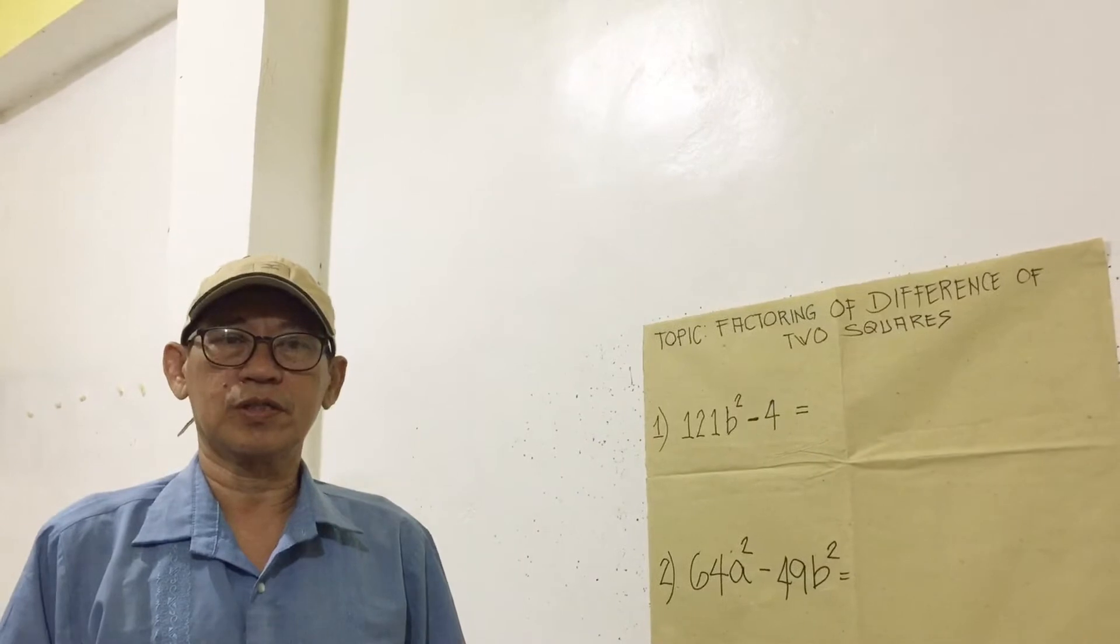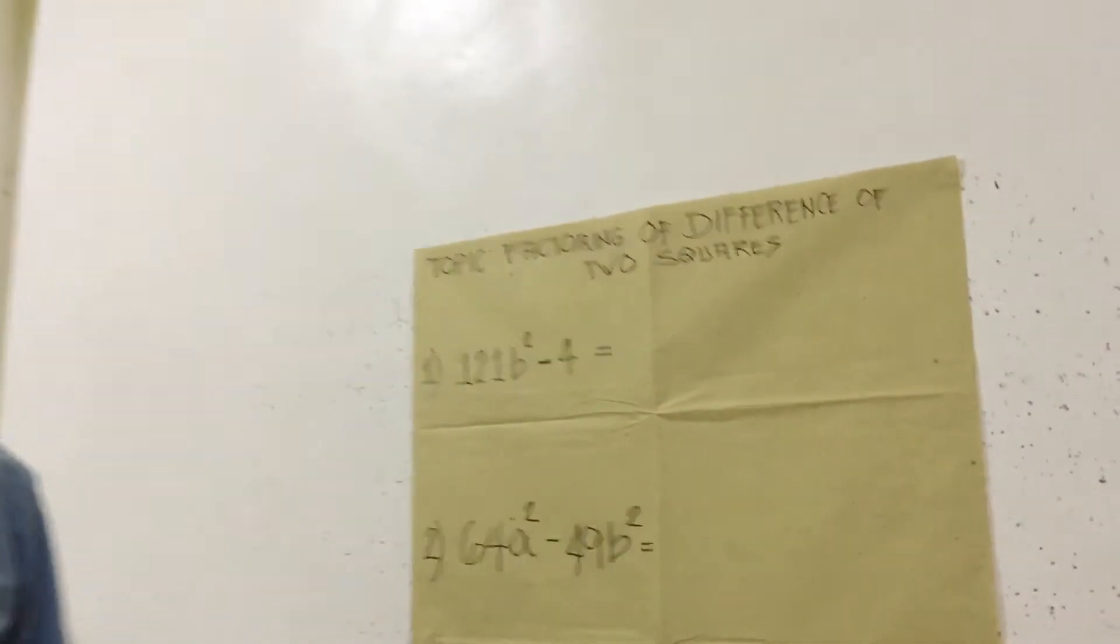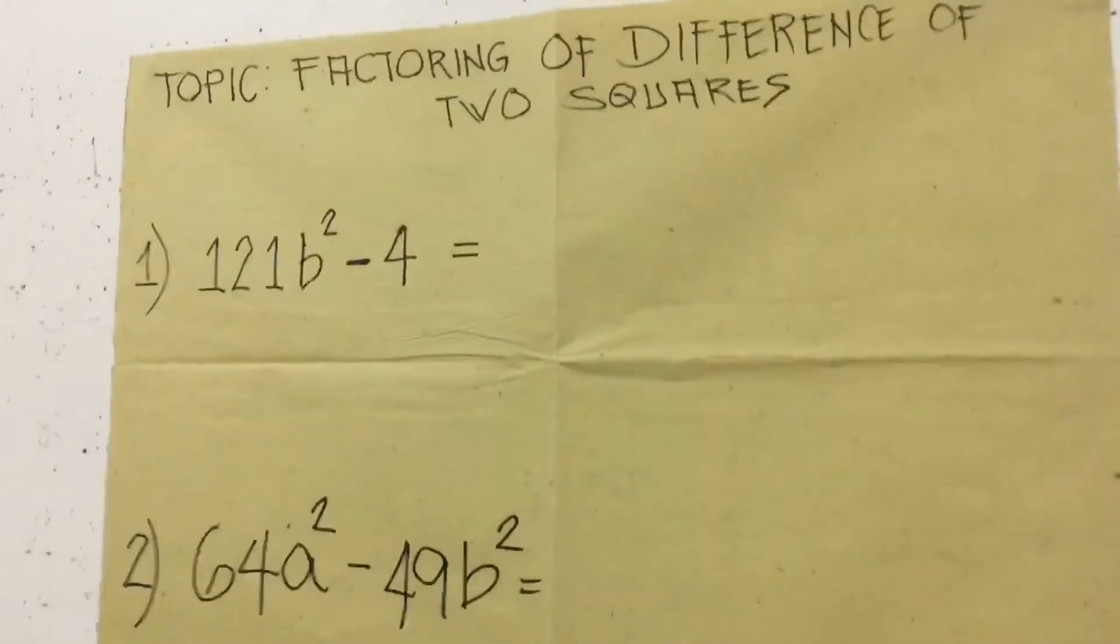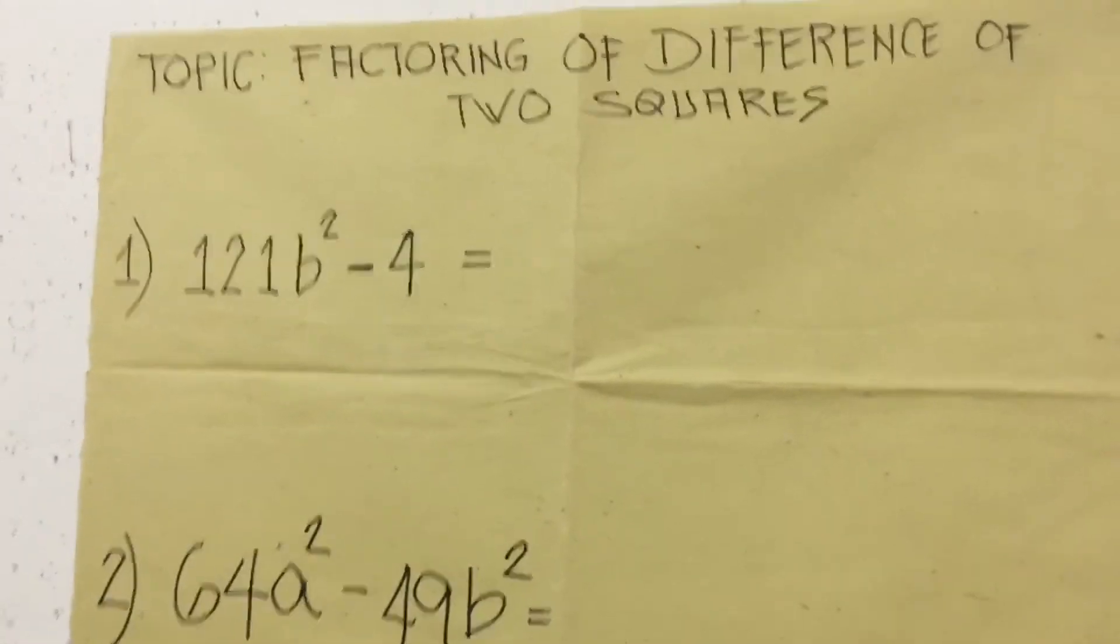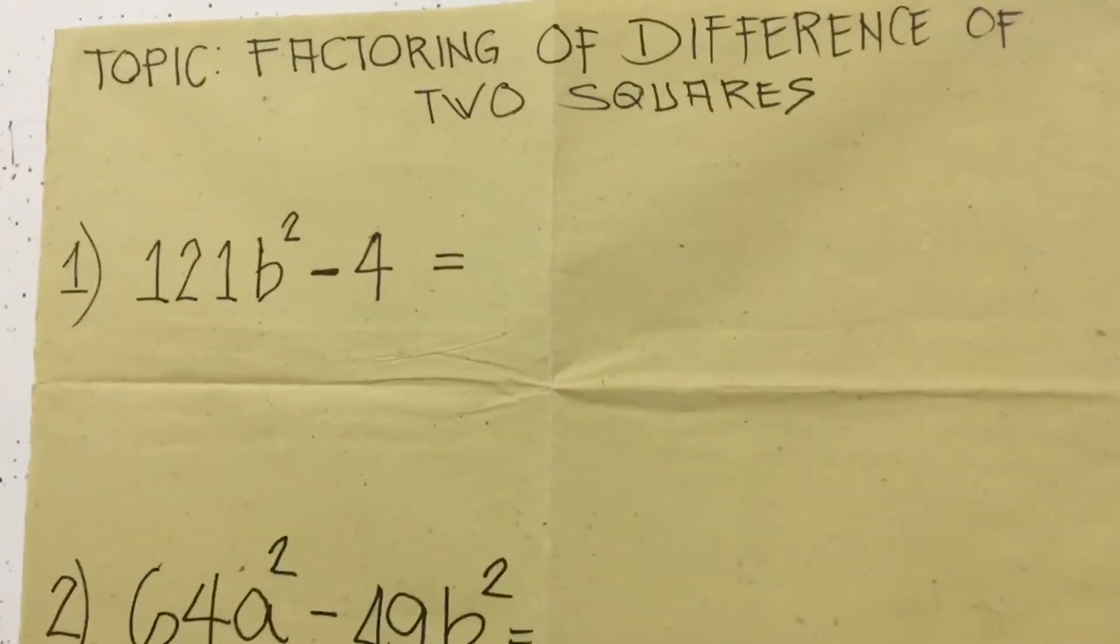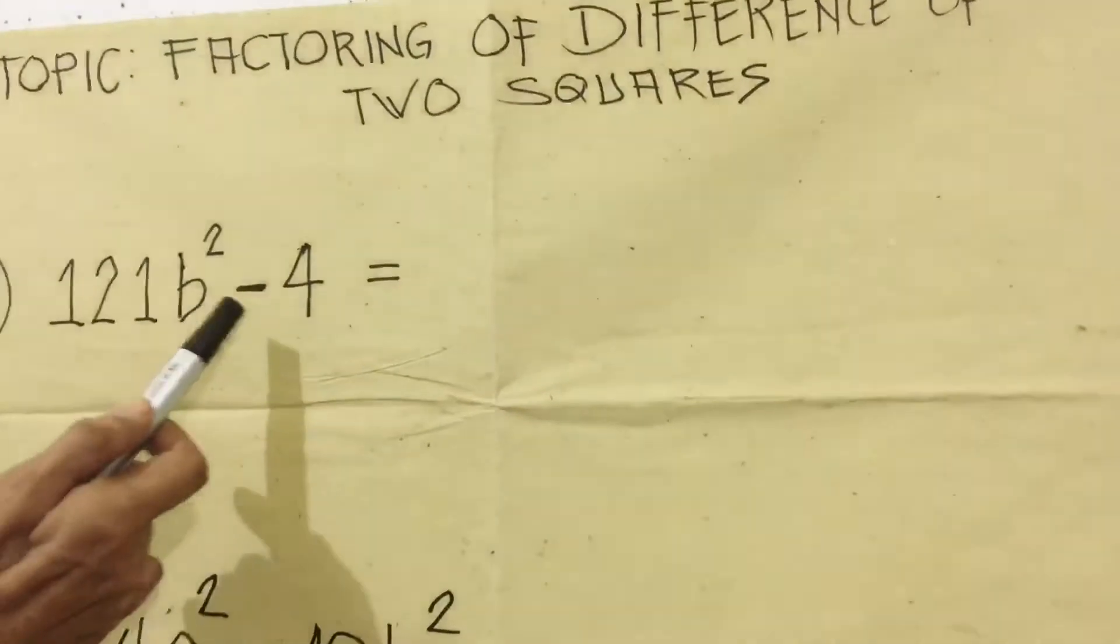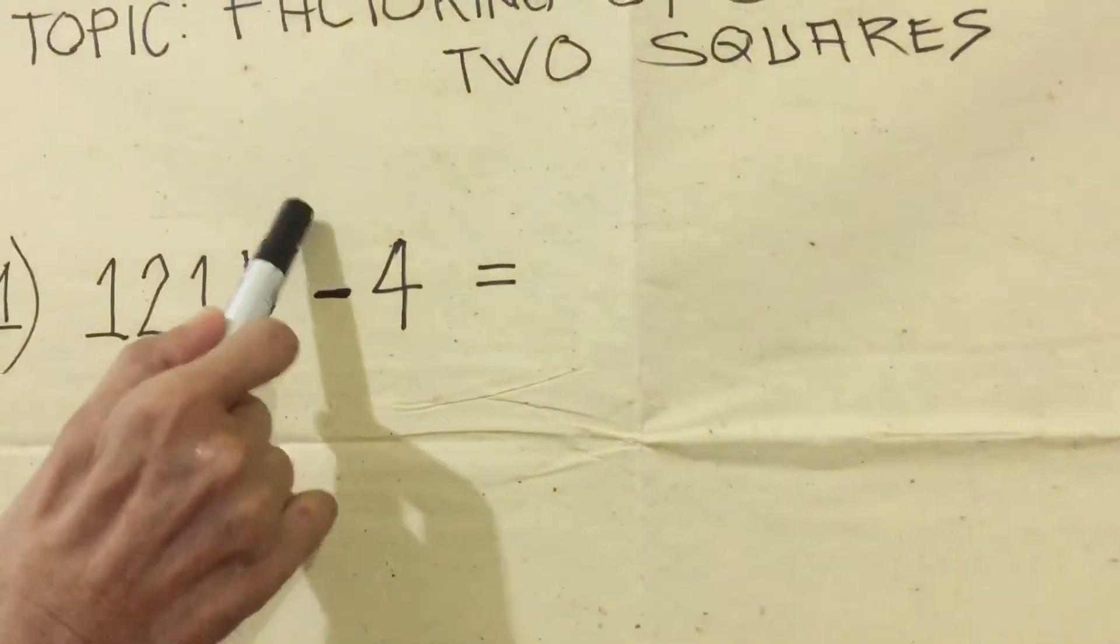Hello everyone, I'm Teacher Al. Welcome to my channel. Today our topic is factoring the difference of two squares. The indicators of the difference of two squares are the minus sign and the square.